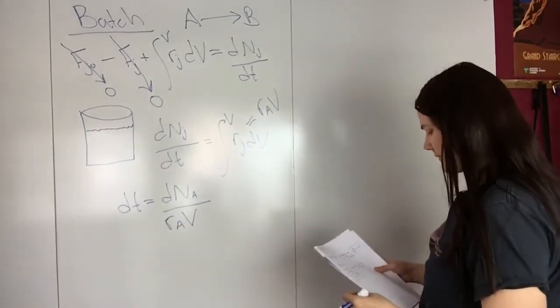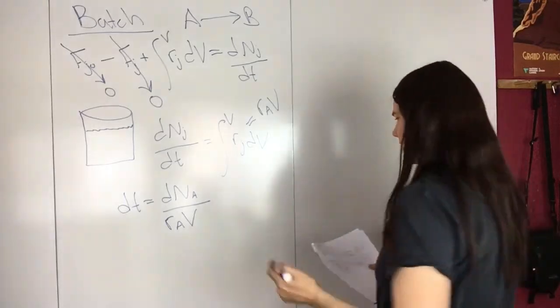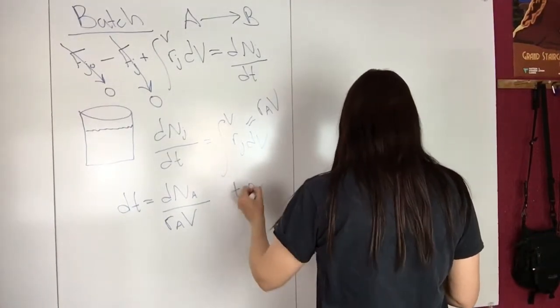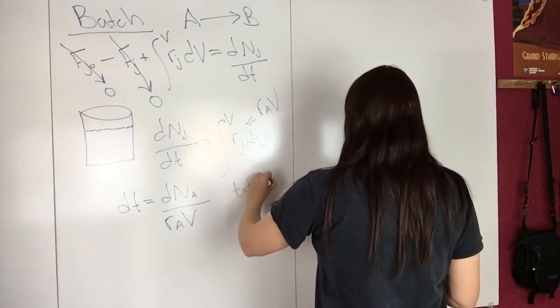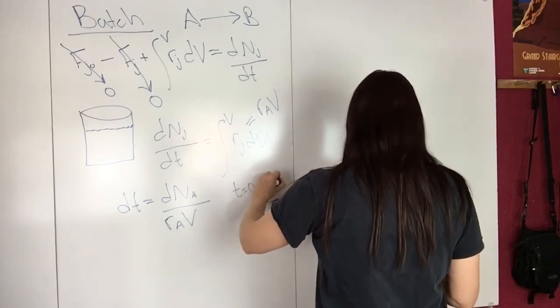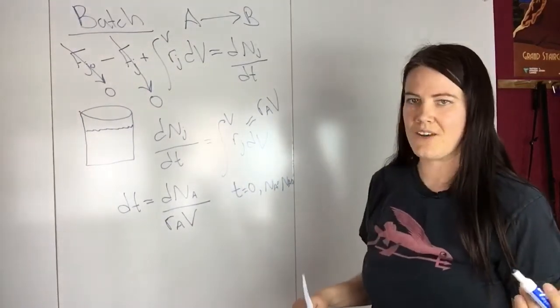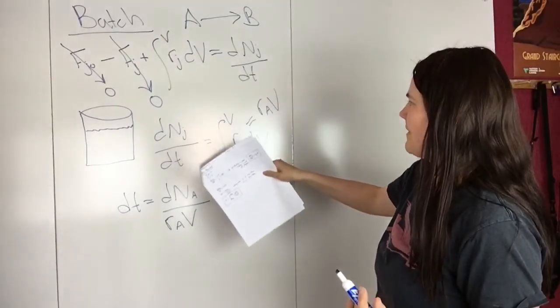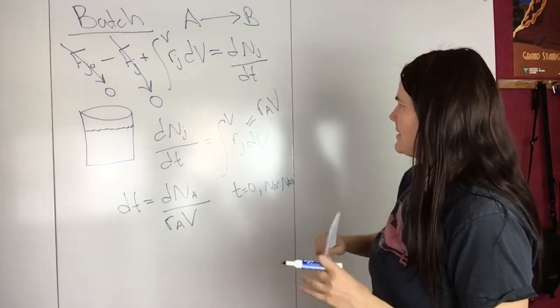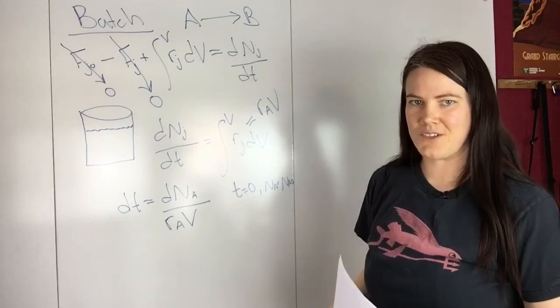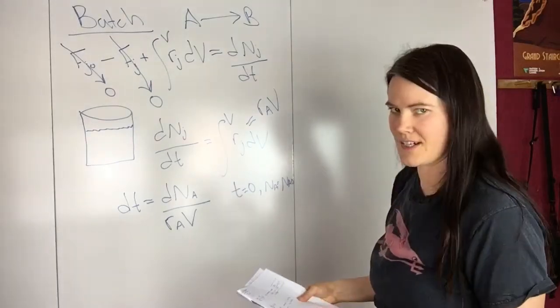and then we can integrate with the following limits. We want to integrate from t equals zero. So at t equals zero, NA equals NA naught, so whatever you have. So at t equals zero, NA, the amount of A that you have is what you had at zero, so nothing has occurred yet.